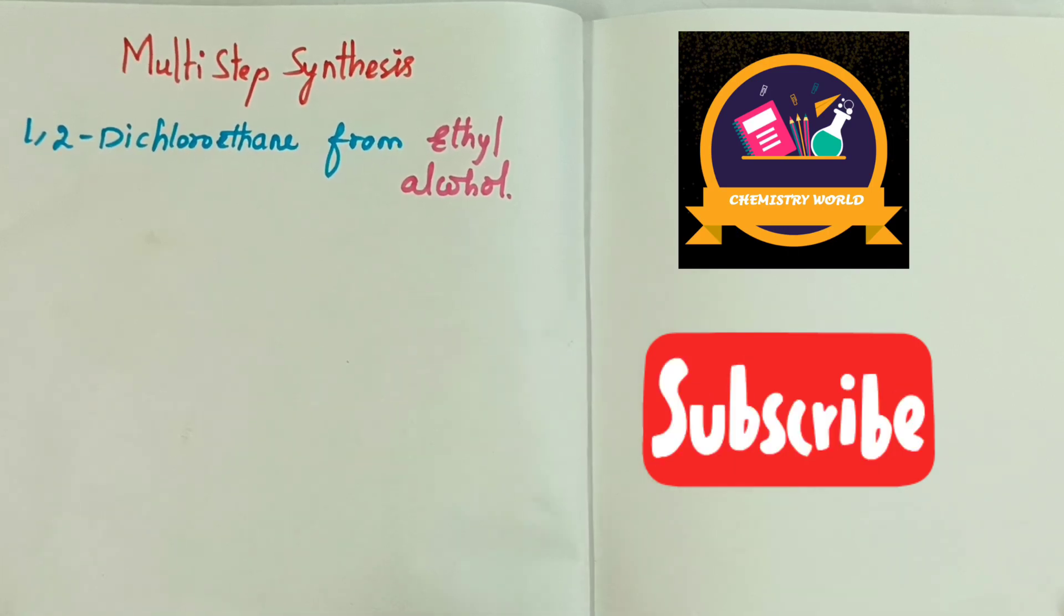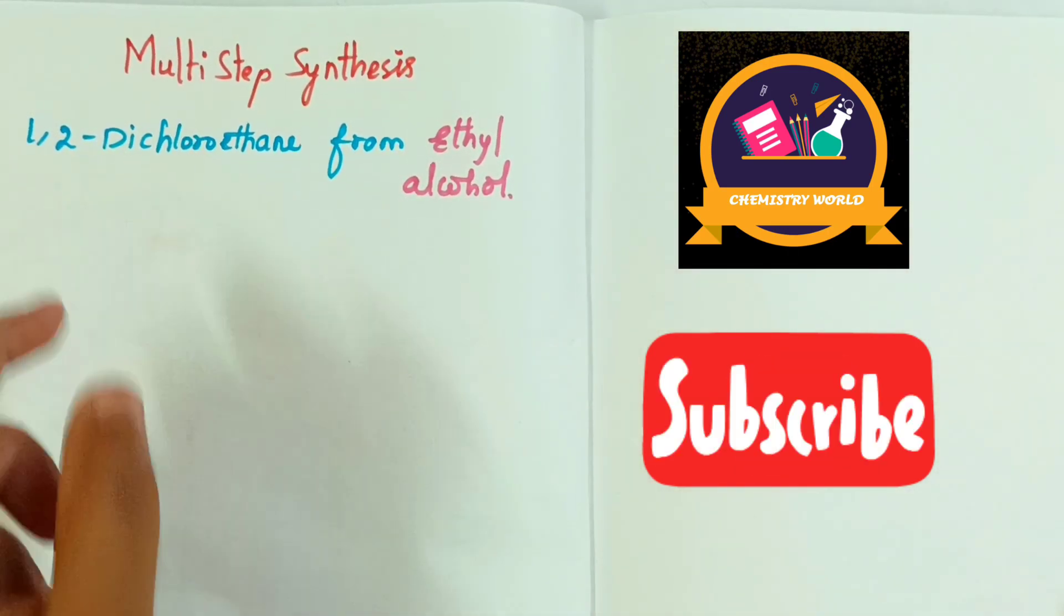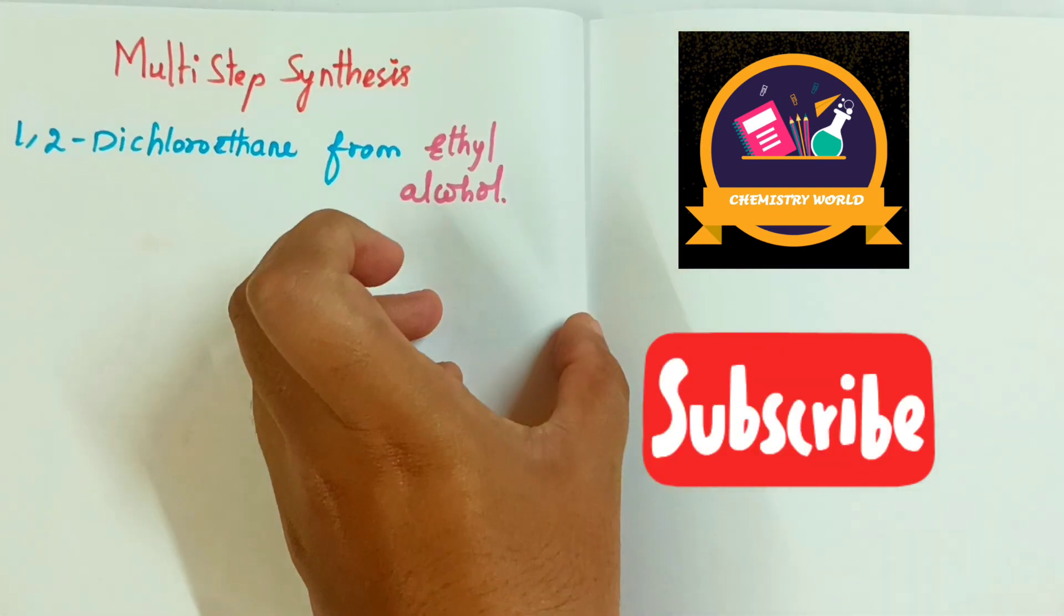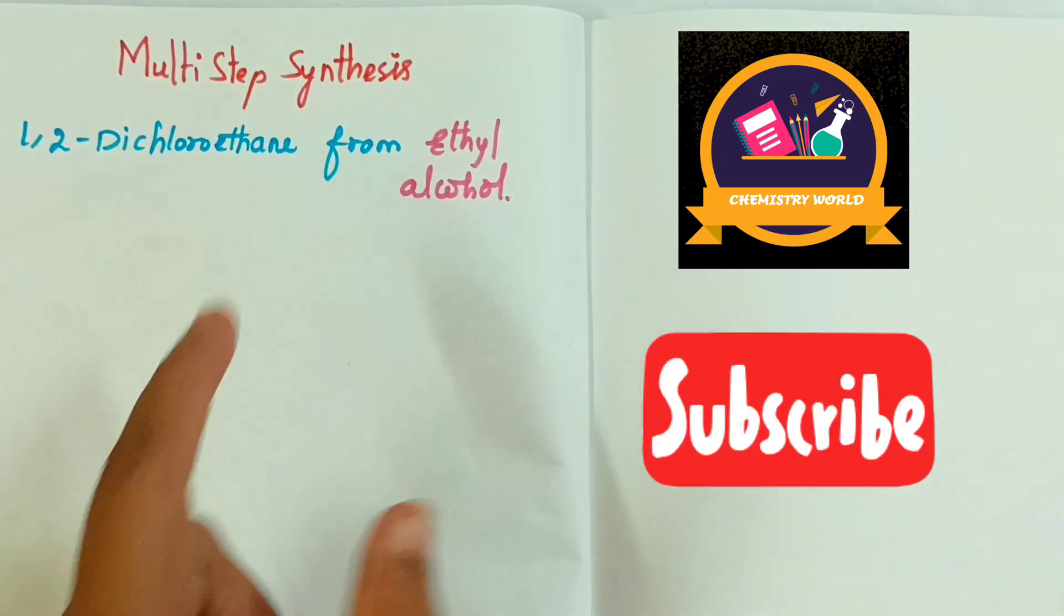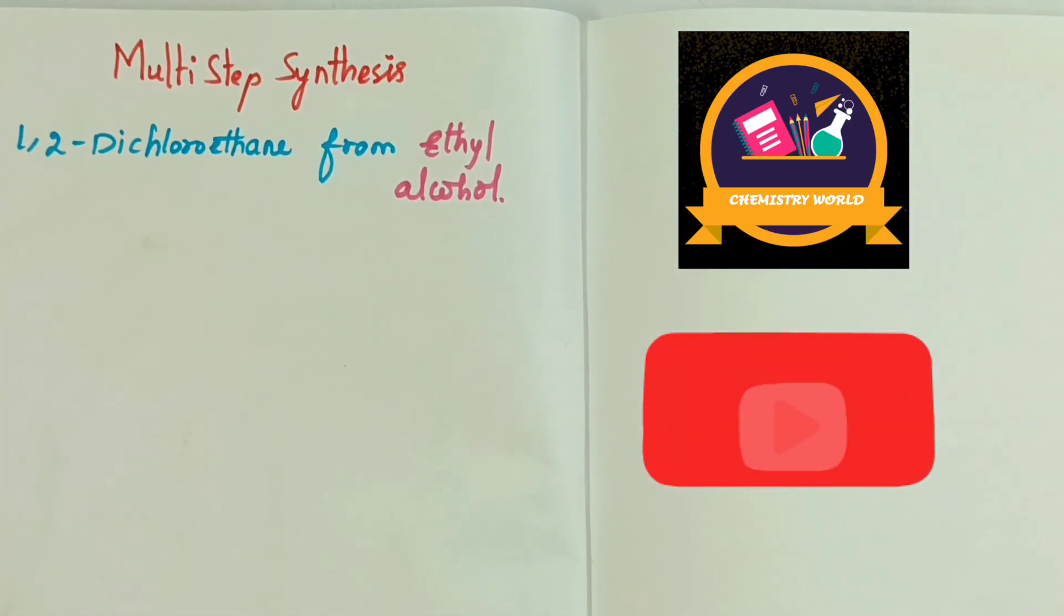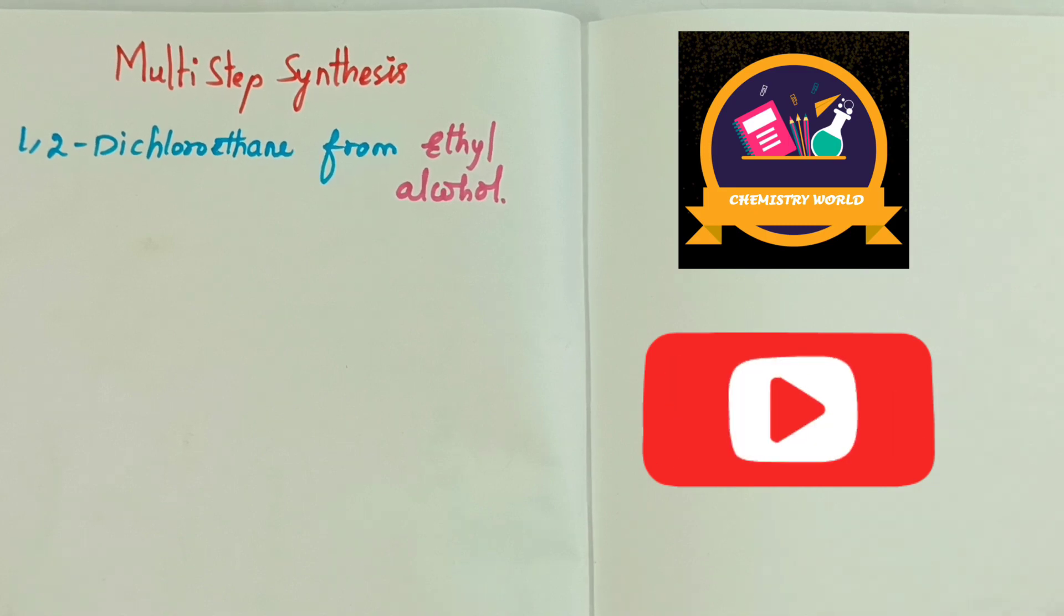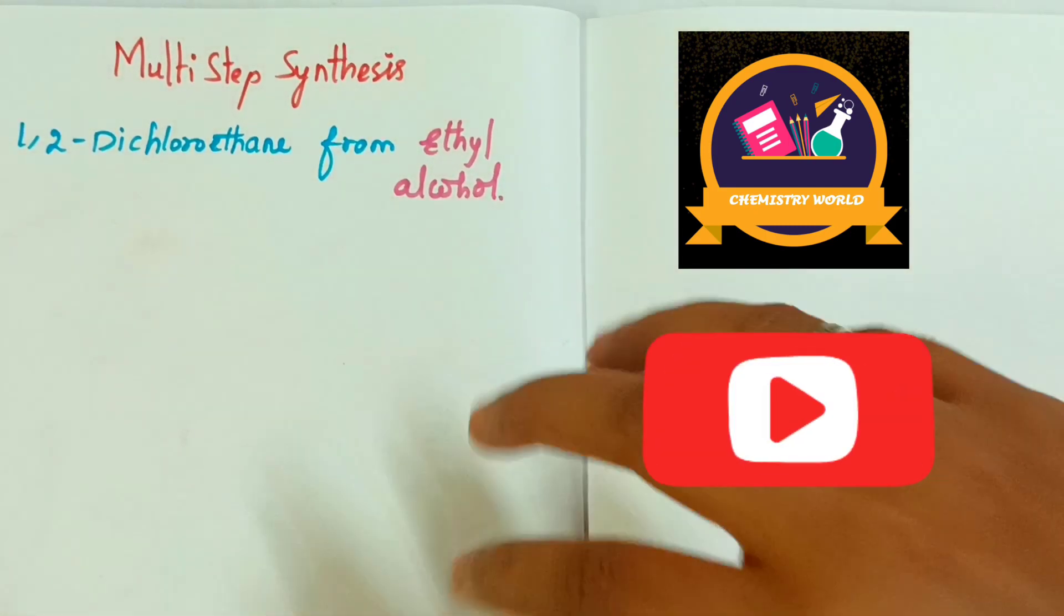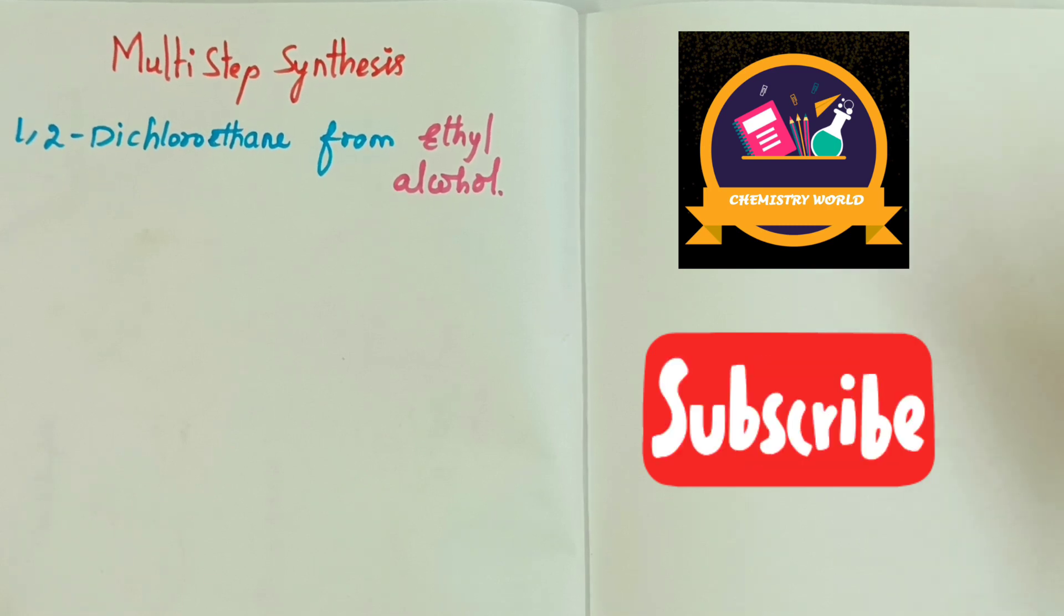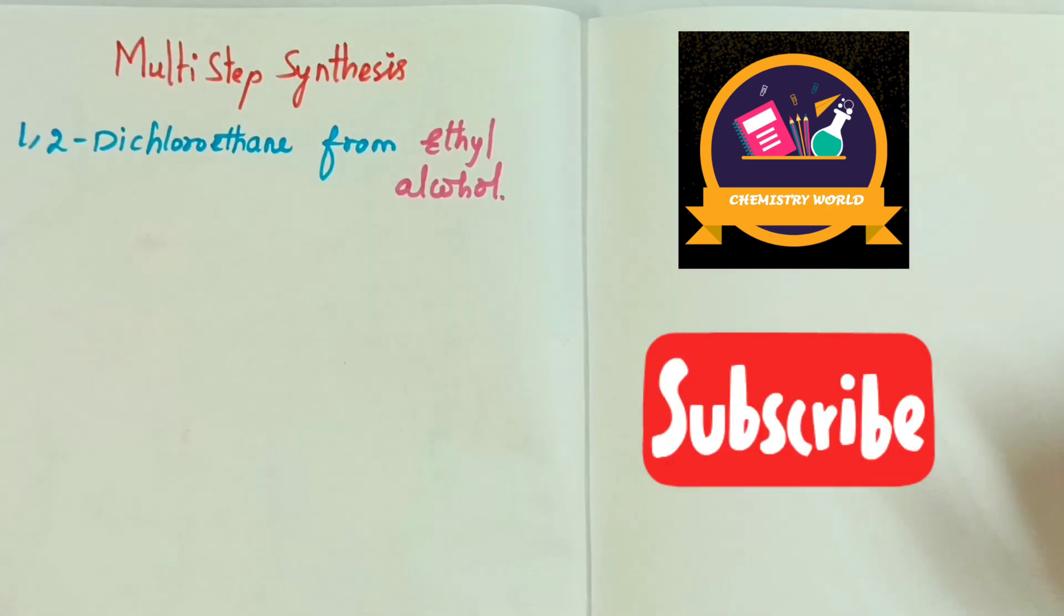Let's take an example: 1,2-dichloroethane from ethyl alcohol. We will prepare 1,2-dichloroethane from ethyl alcohol. Let me ask you a question in the university. We asked this question. As a chemistry student, we have to solve it. That's why this video.